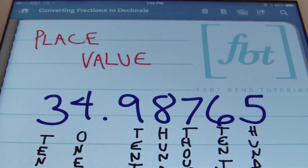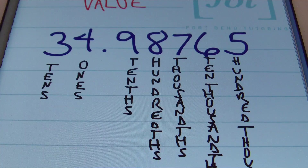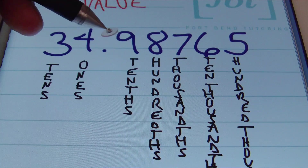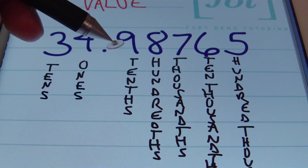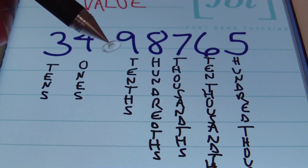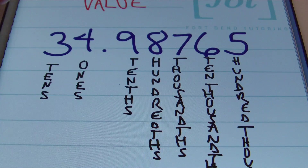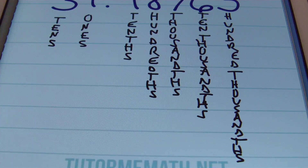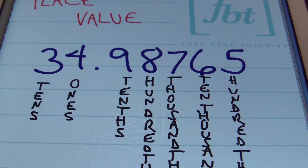The first thing you should know is the place value of your digits. In a number like 34.98765, the three is in the tens place, the four is in the ones place, then you have your decimal. The nine is in the tenths place — one place to the right of the decimal. The eight is in the hundredths place, seven is in the thousandths place, six is in the ten-thousandths place, and five is in the hundred-thousandths place. These digits go in either direction to infinity.